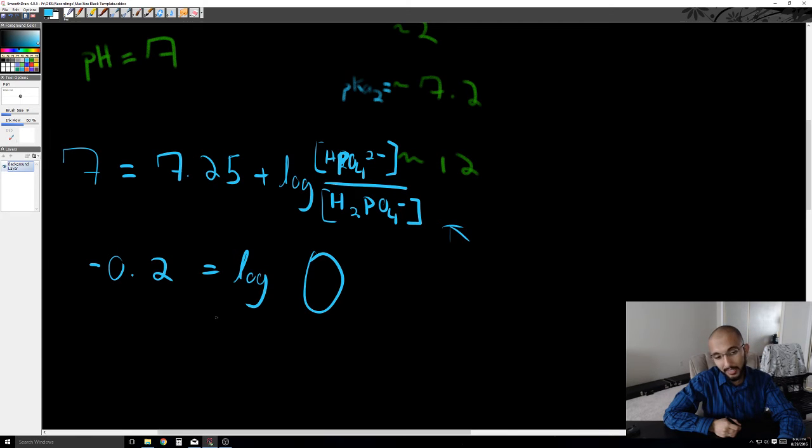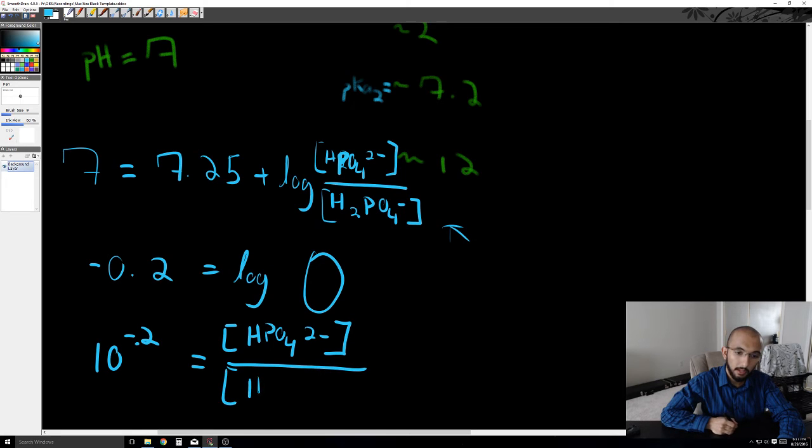And then you'd take anti-log. Now if your calculator has anti-log, great. If your calculator does not have anti-log, then you'll do 10 to the negative 0.2, or whatever this number is in the actual problem set, is equal to this ratio of HPO42- over H2PO4-.